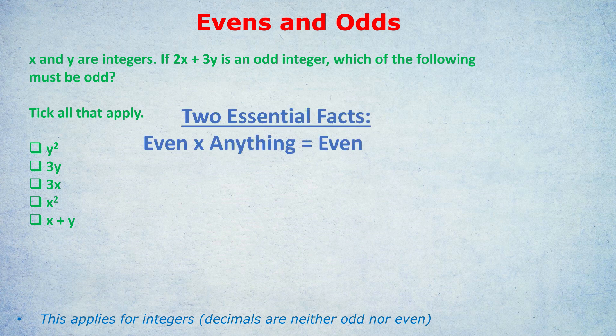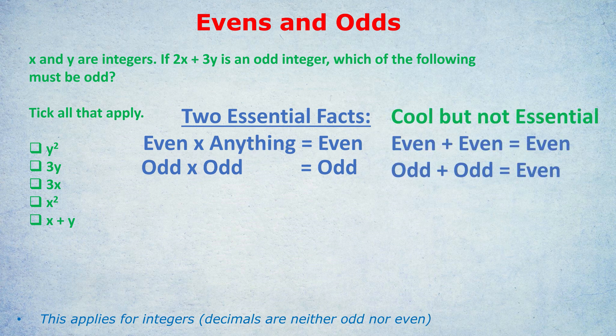First: an even times anything is even. Second: an odd times an odd is an odd — that's the only way to get an odd product. And the other two rules: if you add two of the same type, it's always even. Let's apply this logic to this question.